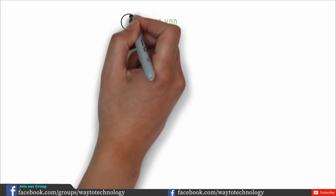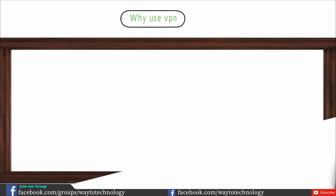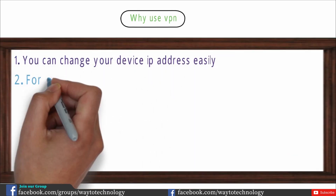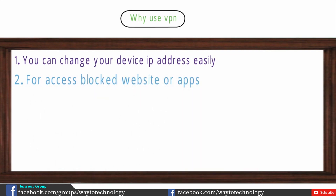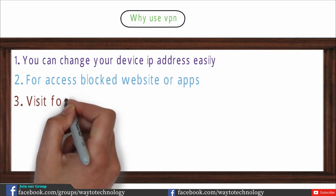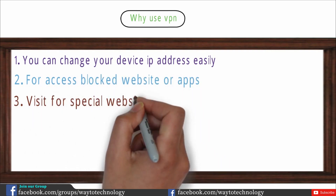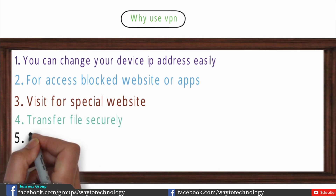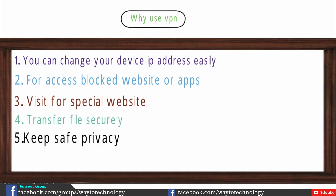How to use VPN and what facilities does it offer? First, we need to change the IP address and access websites that are blocked by apps. We need to visit blocked websites and save our privacy. We can also hide our location or access restricted content.